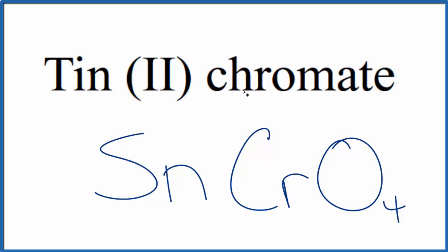If you're given the formula and asked to write the name, you'd know that tin is going to be tin(II) because this chromate ion is 2-. So the tin has to be 2+ to make the net charge 0. This is Dr. V. Thanks for watching.